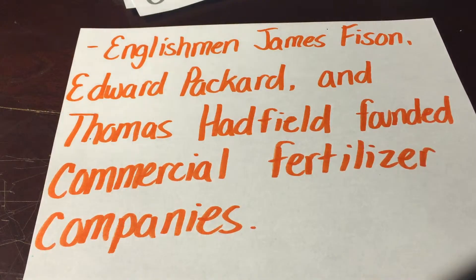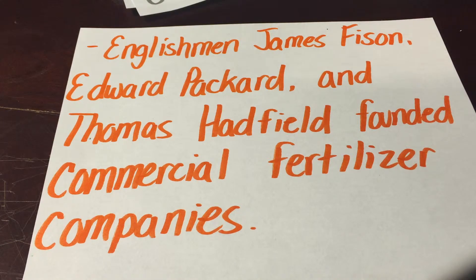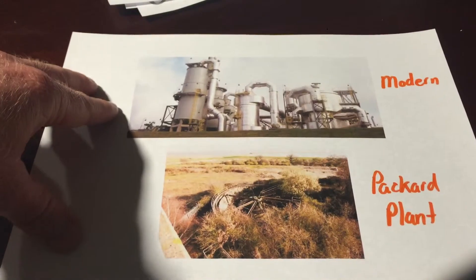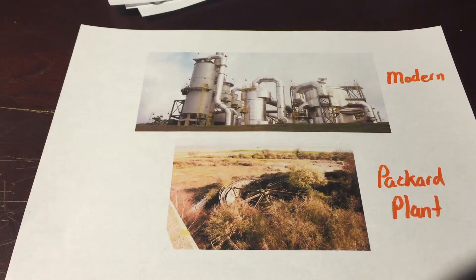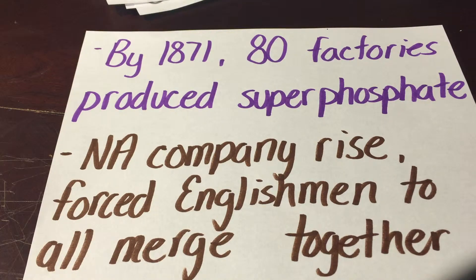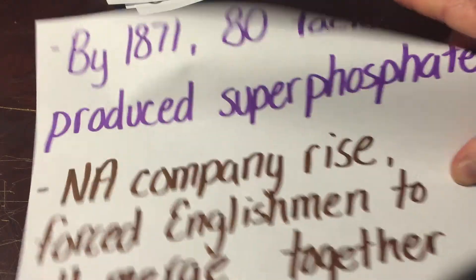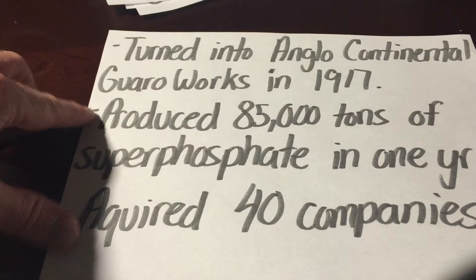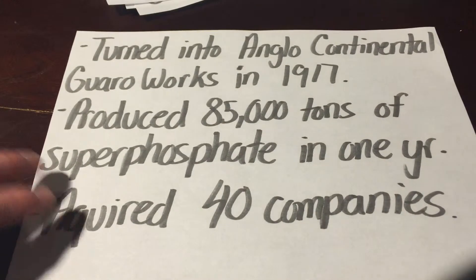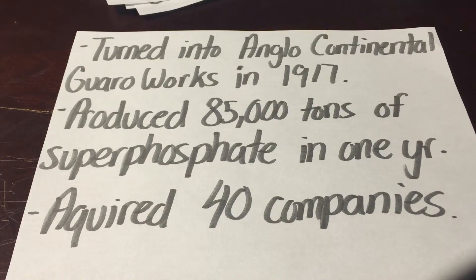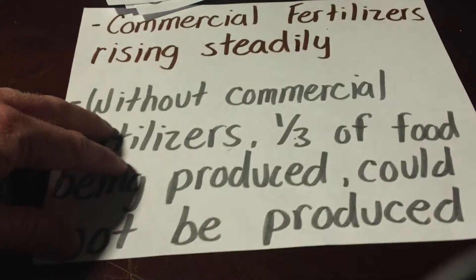Then came Englishmen James Fison, Edward Packard, and Thomas Hadfield, who founded commercial fertilizer companies. They created fertilizers from bone meal, and their discovery of coprolites led them to develop the use of sulfuric acid. They went on to produce many fertilizer plants. By 1871, 80 factories started producing superphosphate. A rise in North American competition forced all the English companies to merge, creating the Anglo-Continental Guano Works Company in 1917. They produced 85,000 tons of superphosphate in one year and acquired 40 different companies across the world.